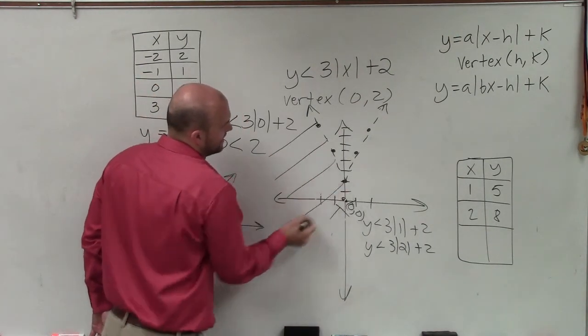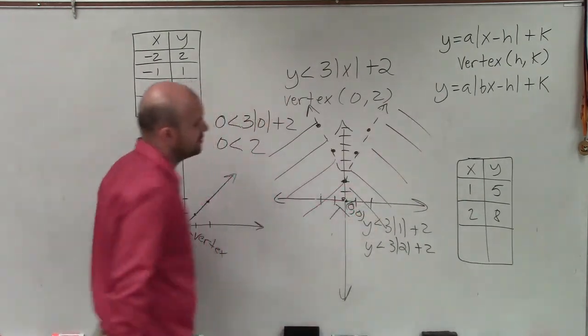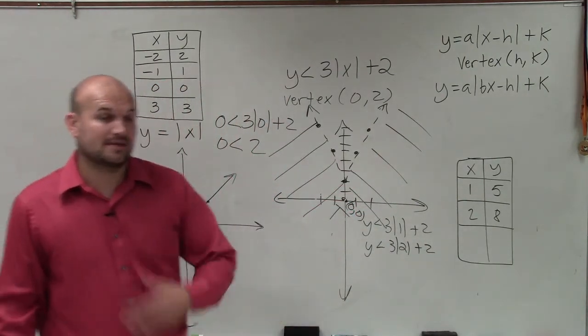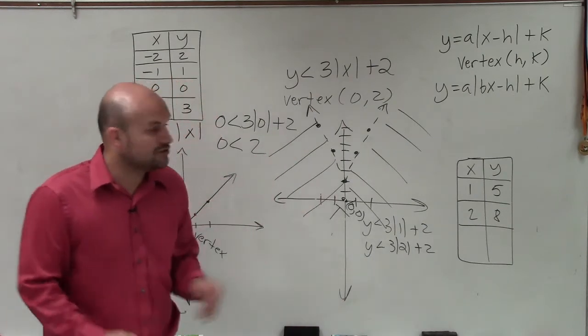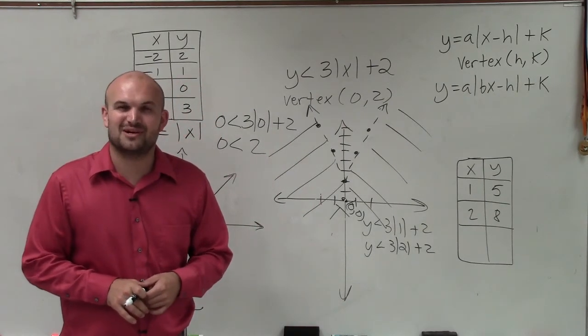So since my test point is true, I shade on the outside of the inequality, or absolute value inequality. So there you go, ladies and gentlemen. That is how you graph an absolute value inequality. Thanks.